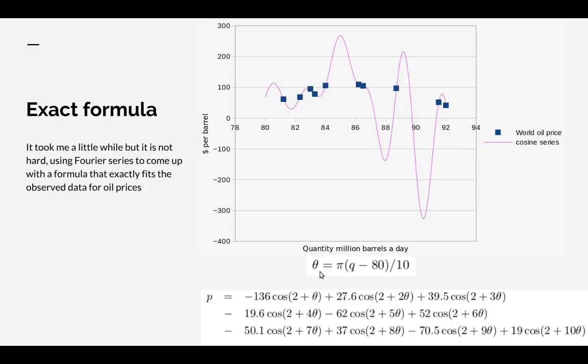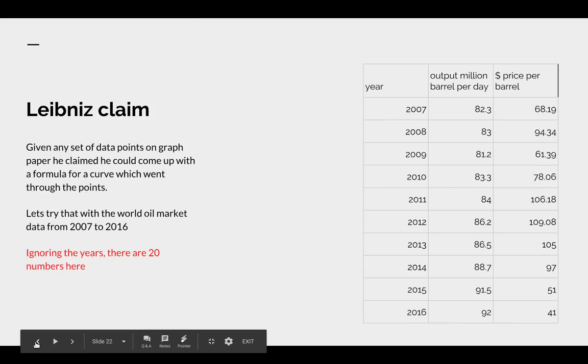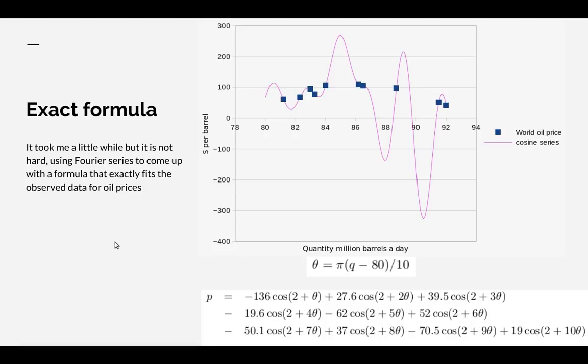I first define phi to be pi times q minus 80 over 10, where q is the quantity. The formula then is p equals -136 cos(2 + theta) + 27.6 cos(2 + 2*theta) + 39.5 cos(2 + 3*theta), etc. So I end up with 10 cosine curves and I exactly fit the data.